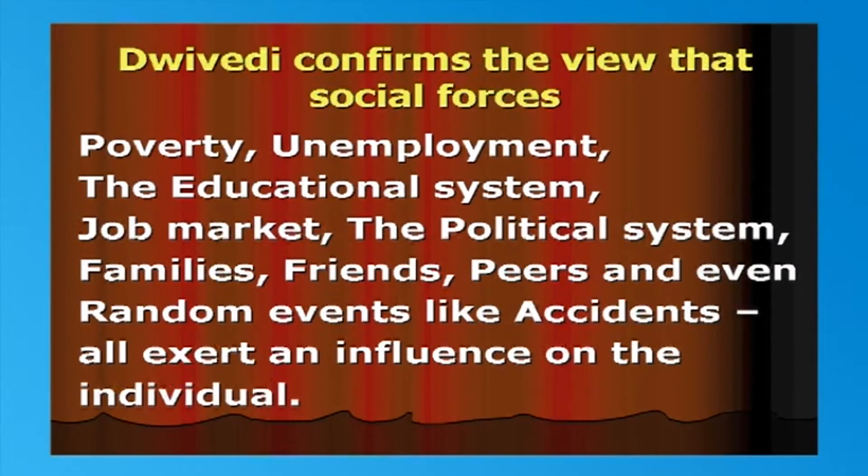Yet some criminologists have related crime with levels of poverty and unemployment. Draivari confirms this view that social forces like poverty and unemployment, the educational system, job market, the political system, families, friends, peers, and even random events like accidents, all exert an influence on the individual. He further states we must bear in mind that a society that successfully keeps 80 to 90 percent of its population on the right side of the law may find that it needs other measures to deter the remaining 10 to 20 percent. Emile Durkheim is of the opinion that crimes are the inevitable result of the interactions of various social forces.